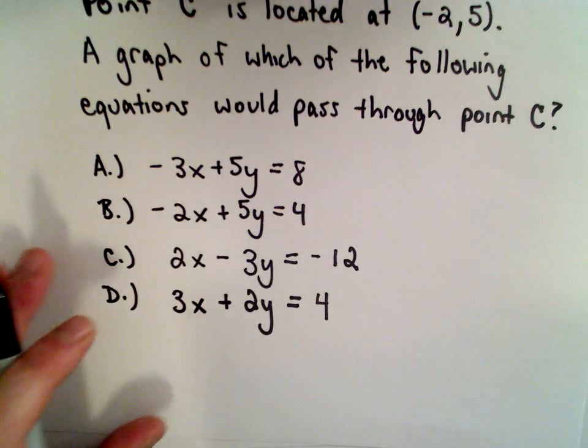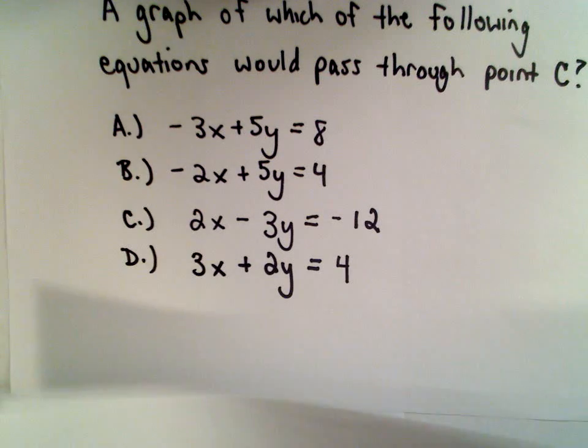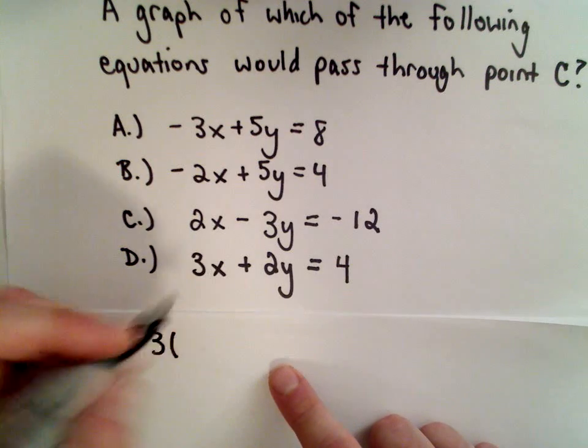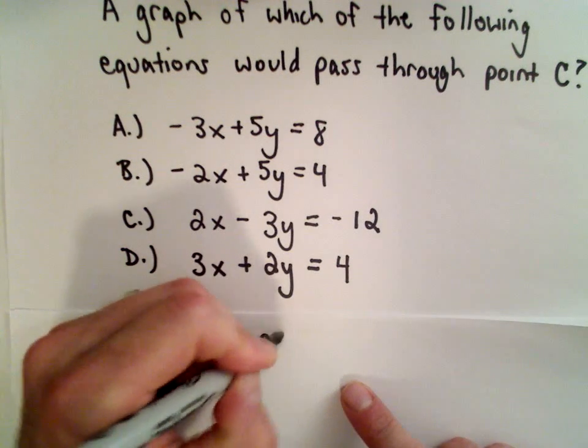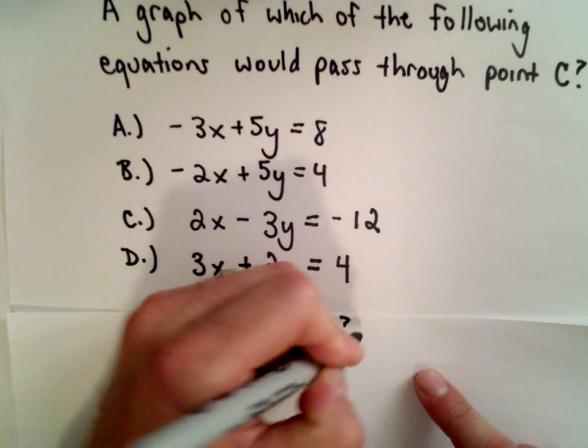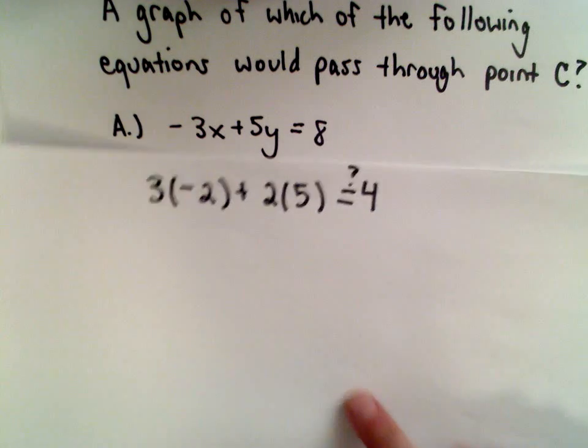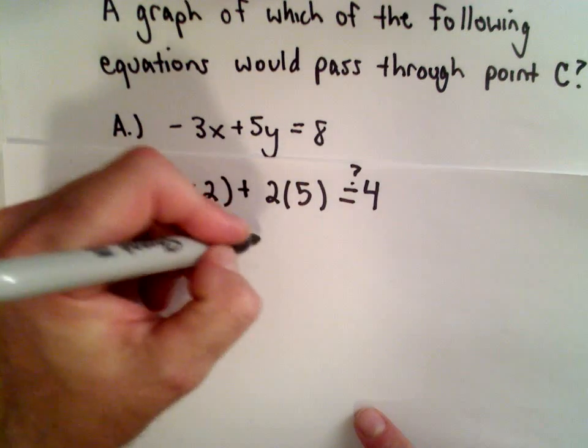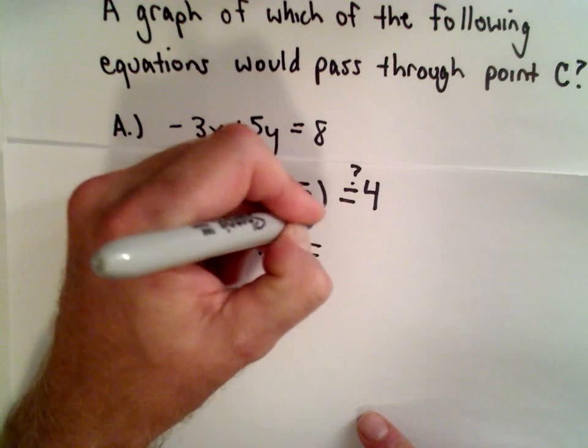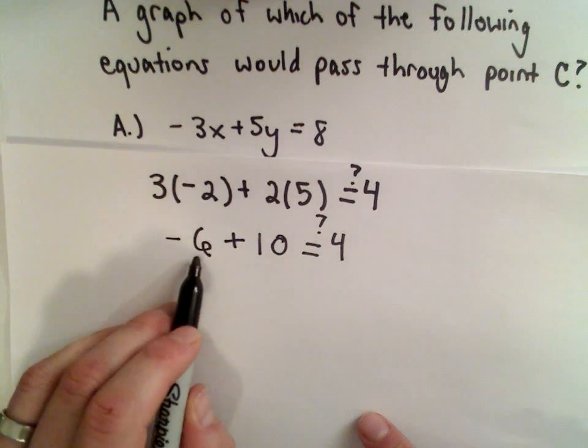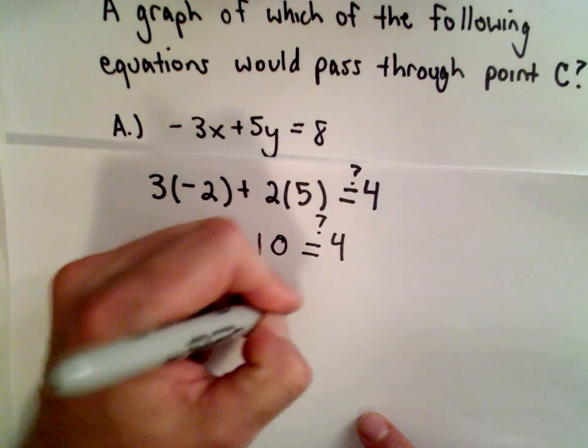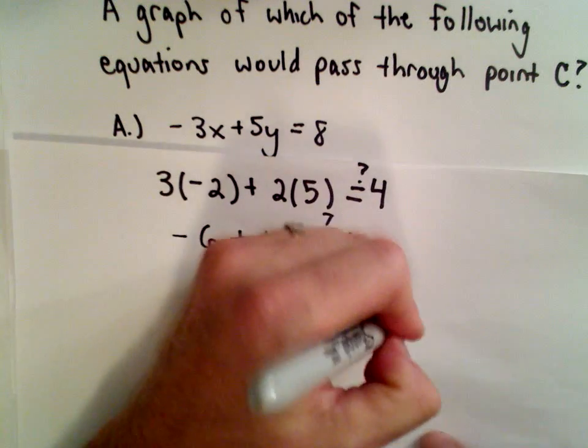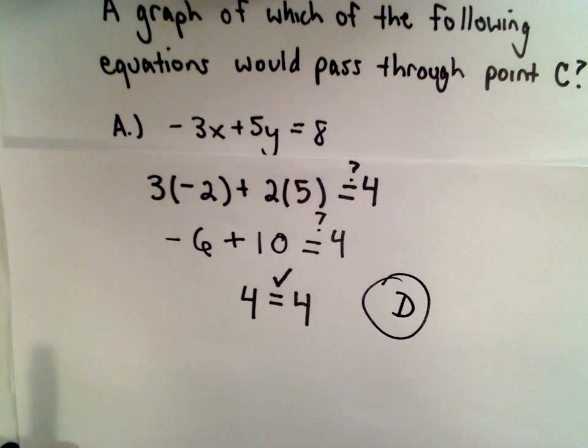If it was me on a multiple choice test, I would circle D and go on to the next one, but let's just check and make sure. 3 multiplied by -2, plus 2 multiplied by 5, does that equal positive 4? Well, 3 multiplied by -2, that's -6. 2 times 5 is going to be 10. Does that equal 4? Yeah, it does, because -6 plus 10 is going to be positive 4. We finally got a match. It looks like answer choice D is going to be the correct answer in this case.